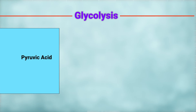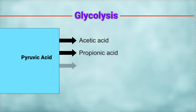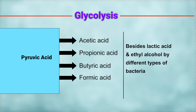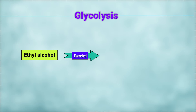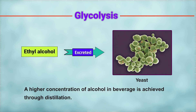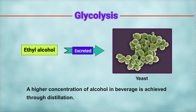Pyruvic acid can be converted into a wide variety of other products — namely acetic acid, propionic acid, butyric acid, formic acid, etc. — besides lactic acid and ethyl alcohol, by different types of bacteria. Ethyl alcohol is not retained inside the microorganism but is excreted. Accumulation of alcohol beyond a certain limit kills the microorganism — for example, 30% in yeast. A higher concentration of alcohol in beverages is achieved through distillation.